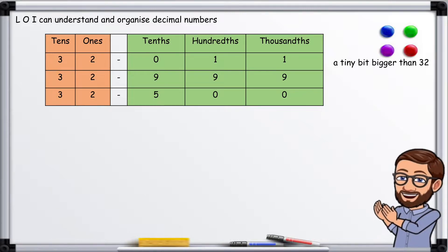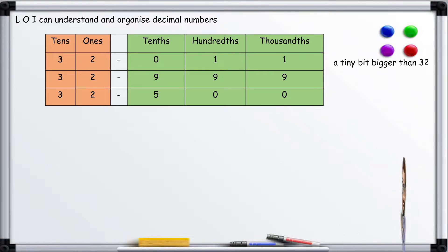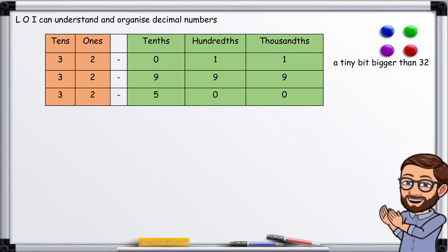As you can see in this table, we have columns like we did in place value. We have tens and ones, and then that's where we have our decimal point. Then we have tenths, hundredths, and thousandths. So 32.011 is a tiny bit bigger than 32. 32.999 is a tiny bit smaller than 33. And 32.5 is right in the middle.